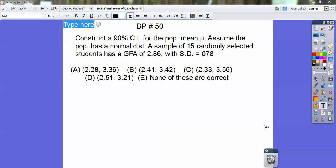Hey guys, this is Otis Campbell, and this is Board Problem 50, and this will be Section 10.1-3, Behavior on Confidence Intervals and Choosing a Sample Size.